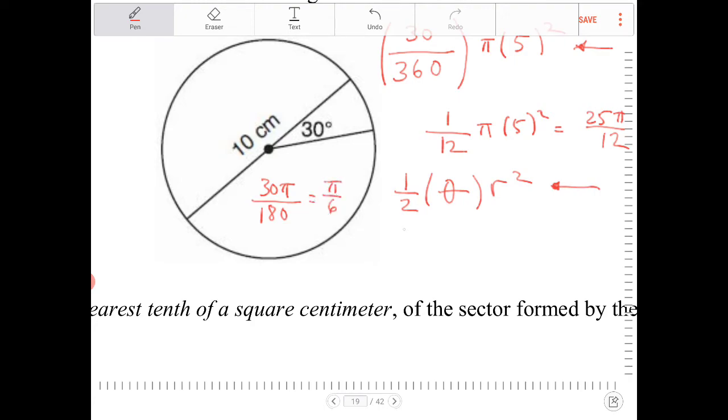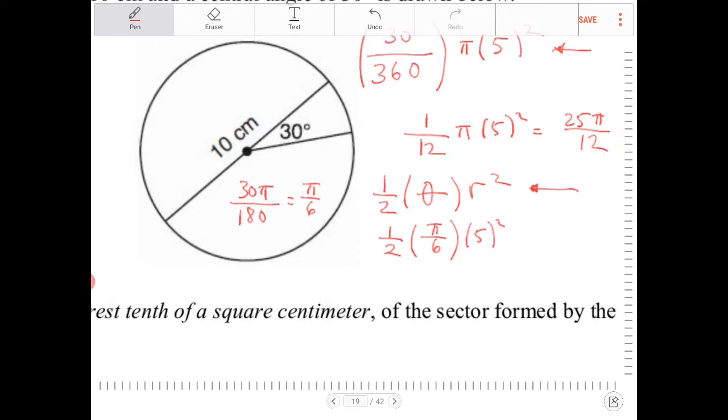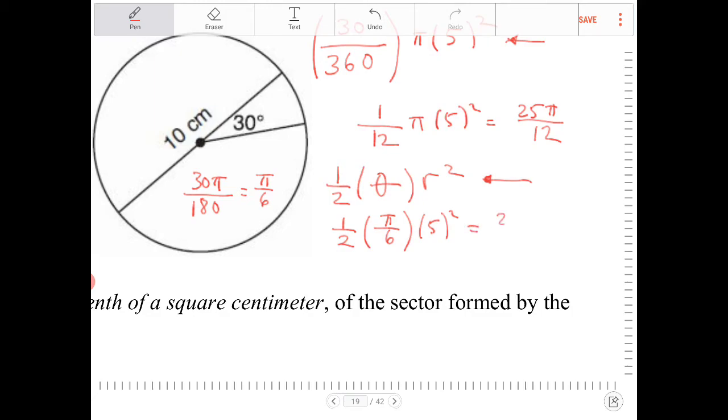And you're going to see really quickly that this simple conversion will lead to very similar computation here. So this is 1/2 pi over 6 times r, which is 5, squared. Can you see here that we actually end up with 25 pi over 12 again?